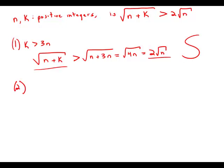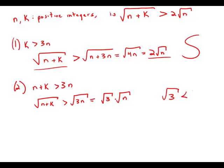Statement 2 tells us that n plus k is greater than 3n. That means the square root of n plus k would be greater than the square root of 3n, which we could write as the square root of 3 times the square root of n. But the problem is the square root of 3 is less than 2.